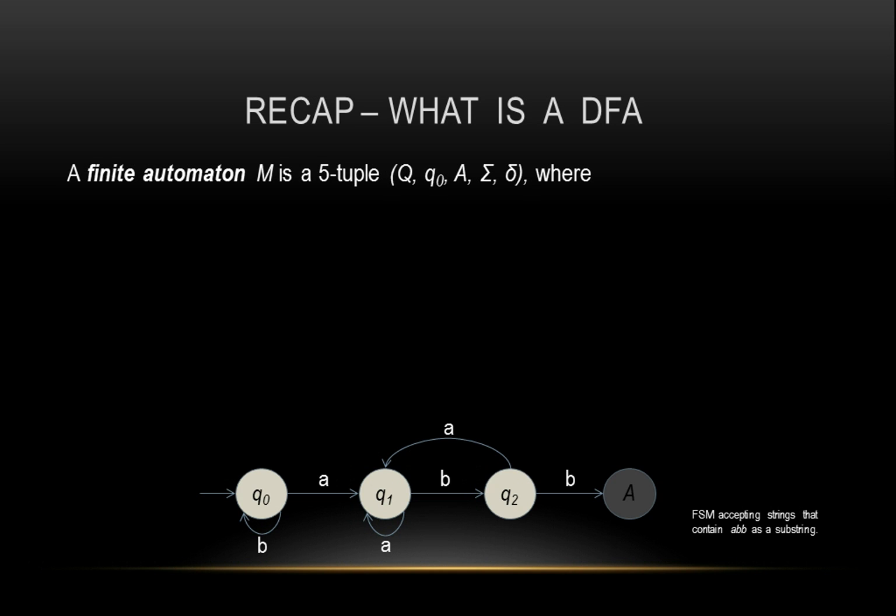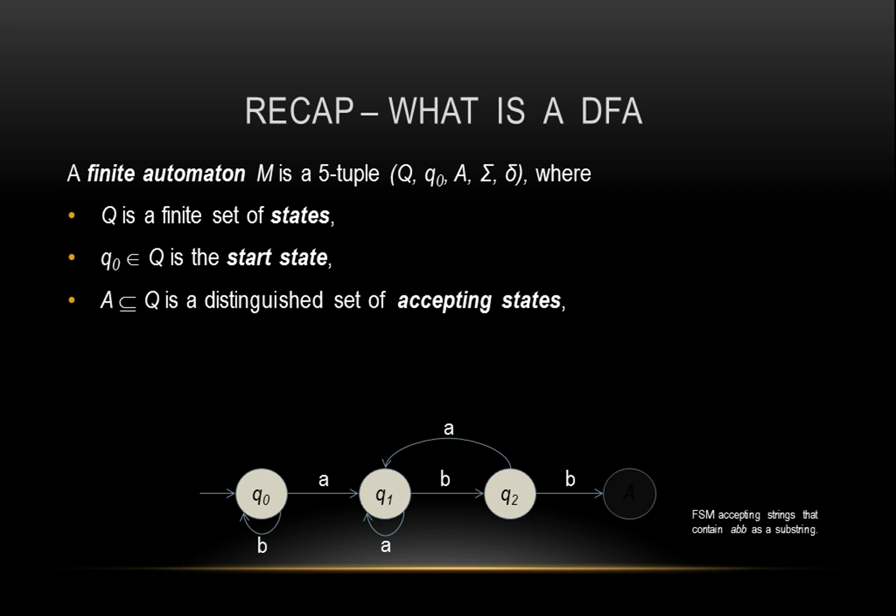Okay, so a DFA have five necessary properties. It has to contain some states. One of those has to be the start state. It has to have at least one accept state.